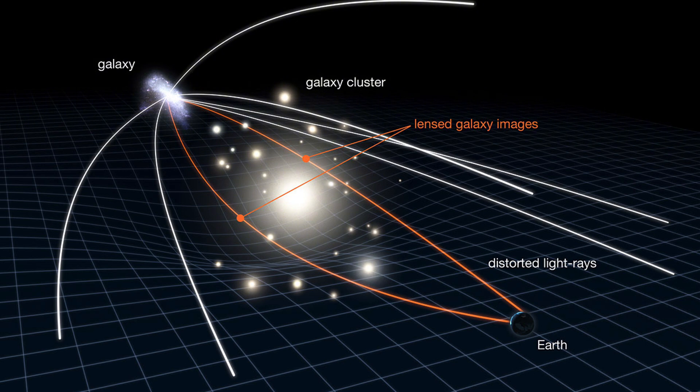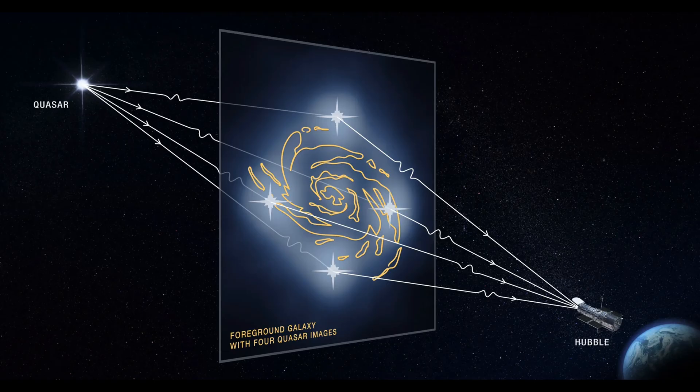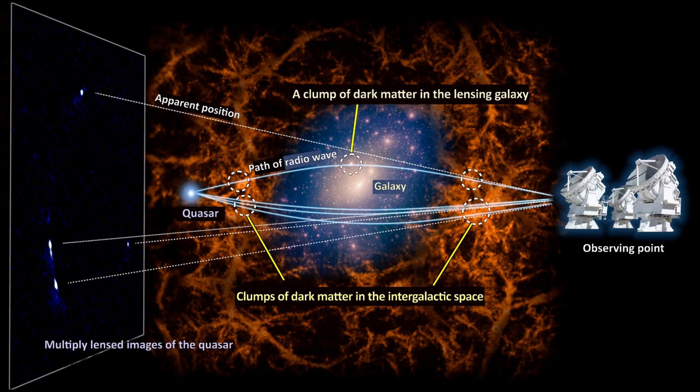Through gravitational lensing, scientists were able to map the distribution of both normal matter and dark matter in the bullet cluster. They observed that while the normal matter, consisting of gas and stars, slowed down and clumped together, the dark matter passed through unaffected.